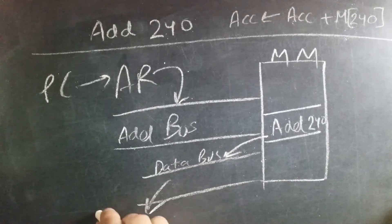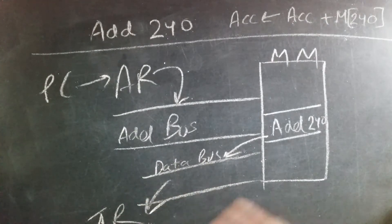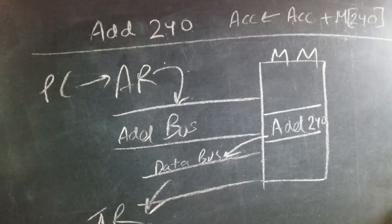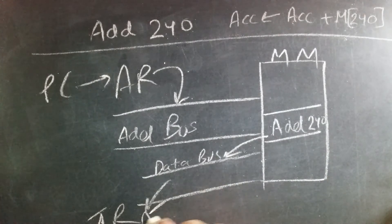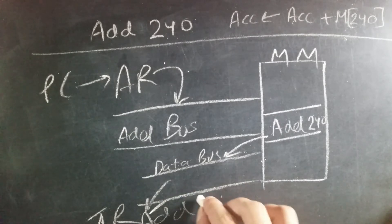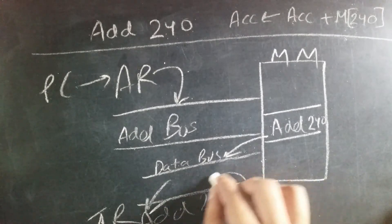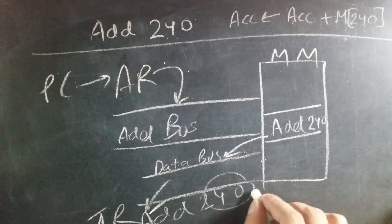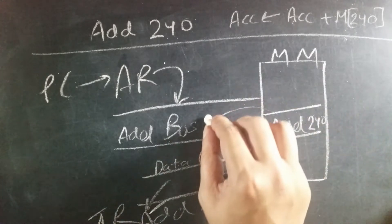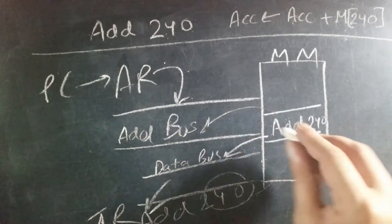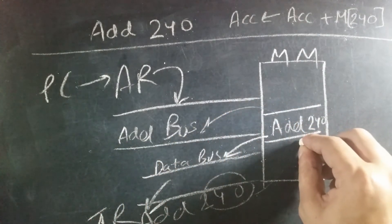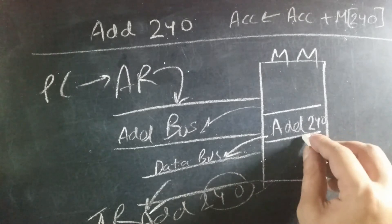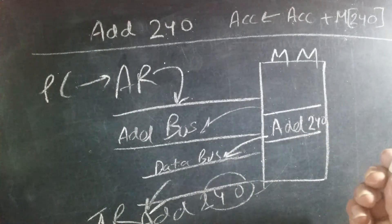Since it is an instruction, it will be placed first on the data bus, and from there it will be placed on the instruction register. Now the instruction register sees that the instruction has an address. This address will be placed back on the address bus.